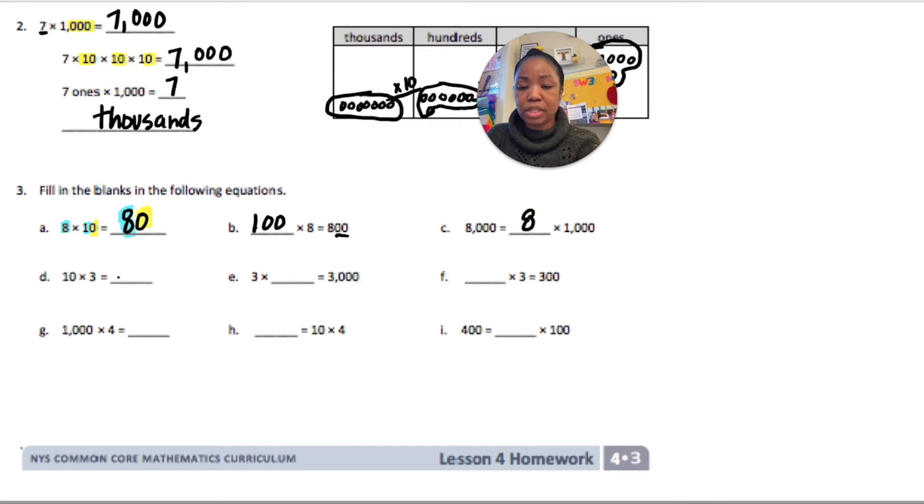For D, we're doing 10 times 3, that's 30. 3 times blank equals 3,000. That's 1,000. Blank times 3 equals 300. That's 100. 1,000 times 4 is 4,000. Blank equals 10 times 4, so that's 40.